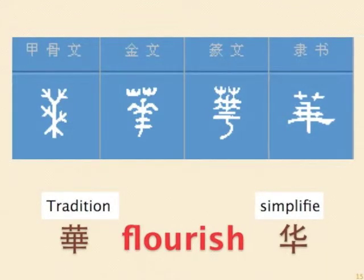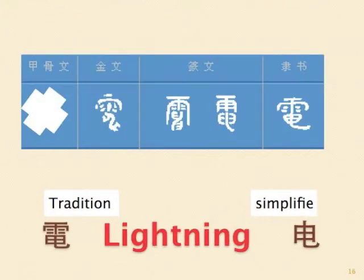Next word: lightning. The traditional form represents the rain in the air and the lightning coming down from the sky. The simplified form deletes the rain part and only keeps the lightning part.